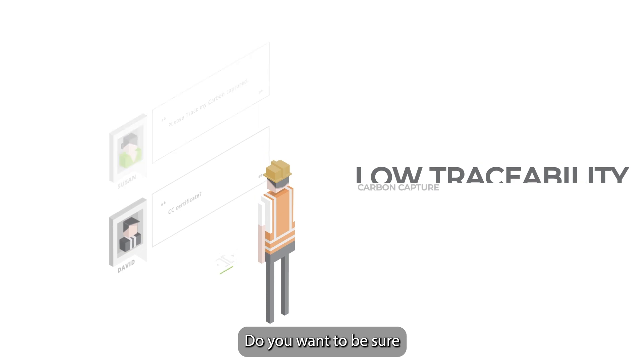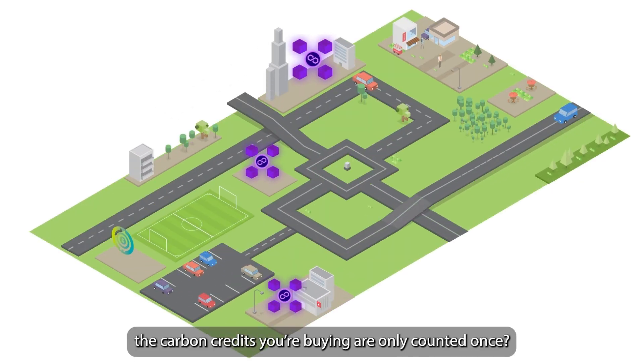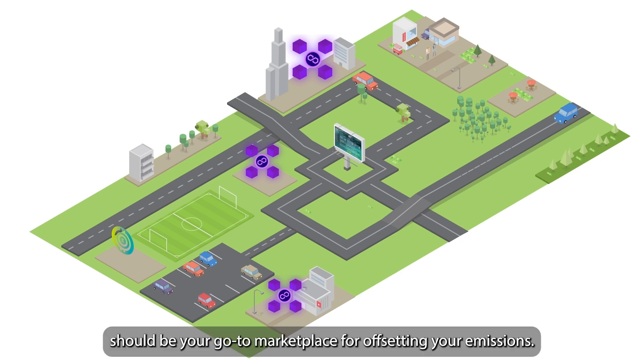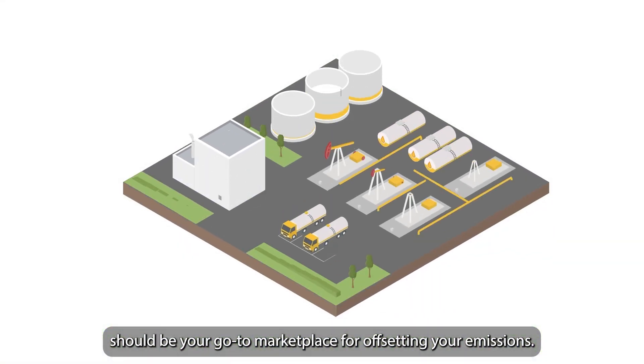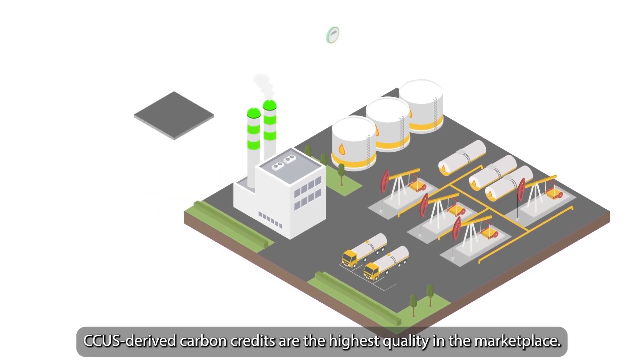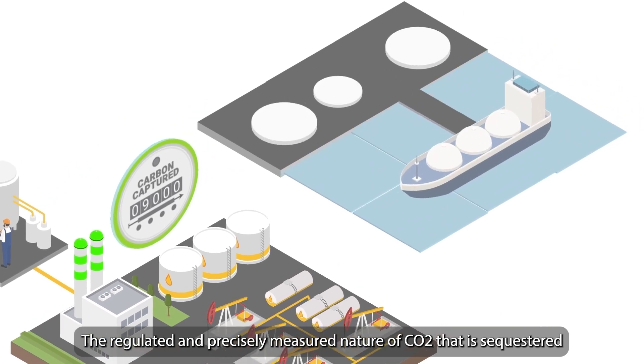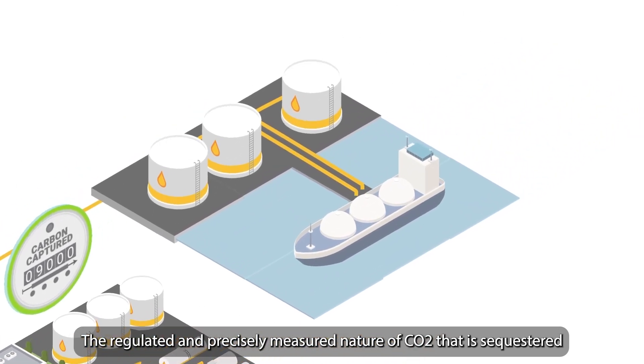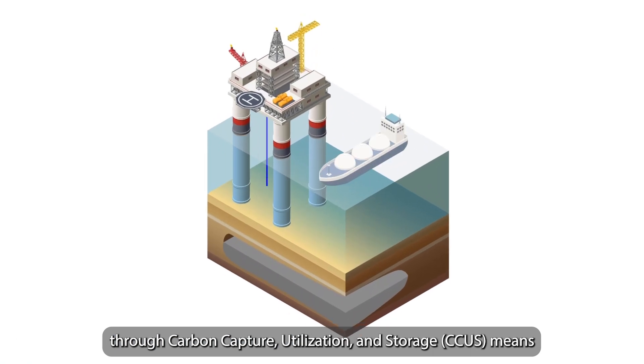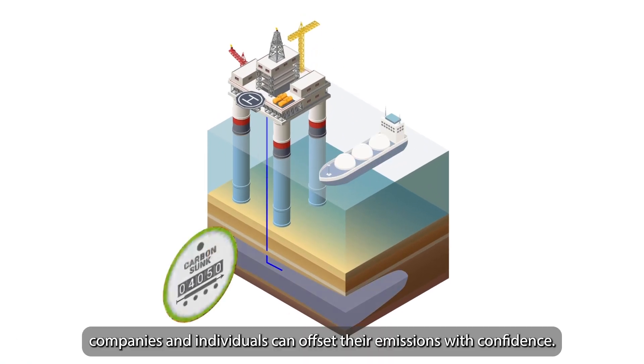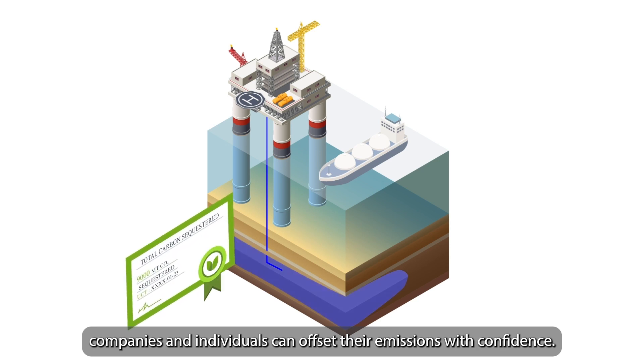Do you want to be sure the carbon credits you're buying are only counted once? Carbon Kerma should be your go-to marketplace for offsetting your emissions. CCUS-derived carbon credits are the highest quality in the marketplace. The regulated and precisely measured nature of CO2 that is sequestered through Carbon Capture, Utilization, and Storage means companies and individuals can offset their emissions with confidence.